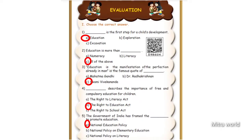Fourth question: This describes the importance of free and compulsory education for children. Options are the Right to Literacy Act, the Right to Education Act, the Right to School Act. Answer is Option B — the Right to Education Act.